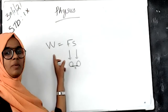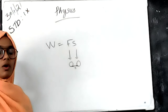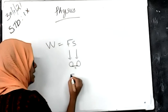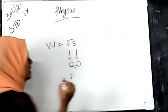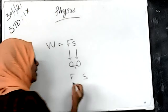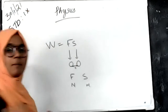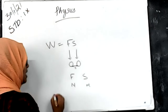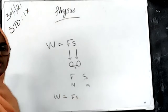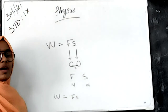Work is done only when a force is applied and a displacement occurs. The amount of force applied is taken as F (in Newtons) and the displacement is taken as S meters. The work done is W = F × S.